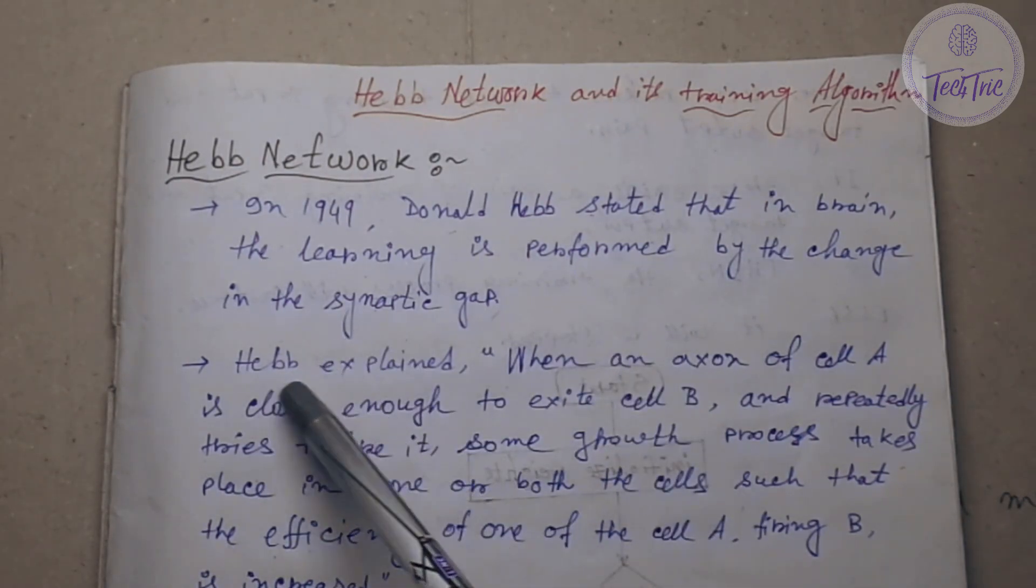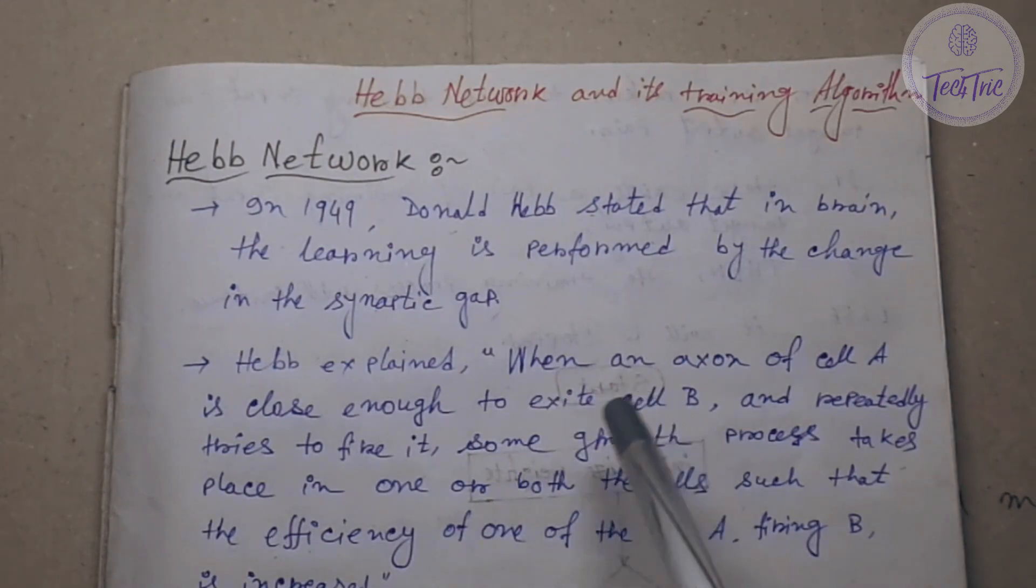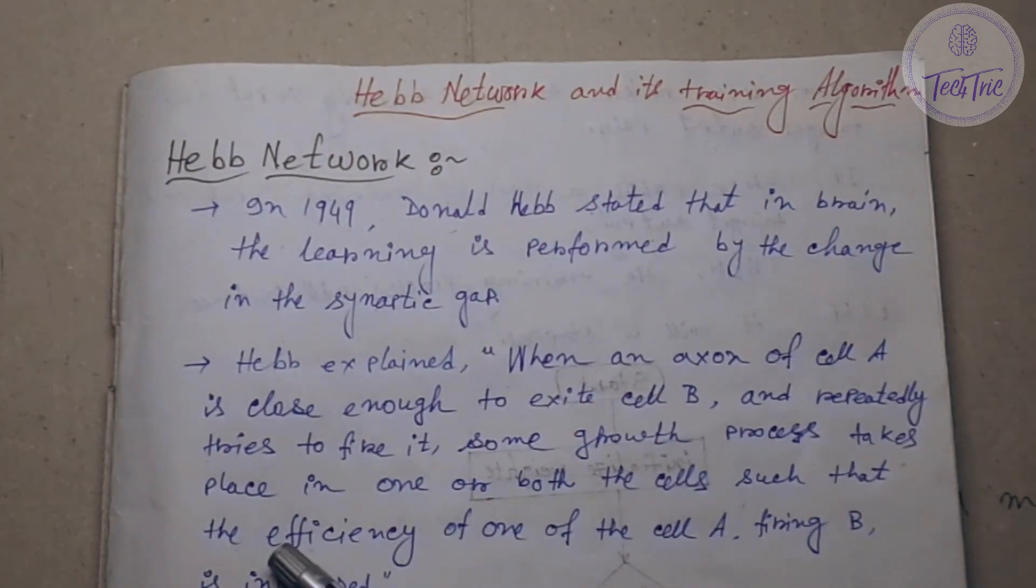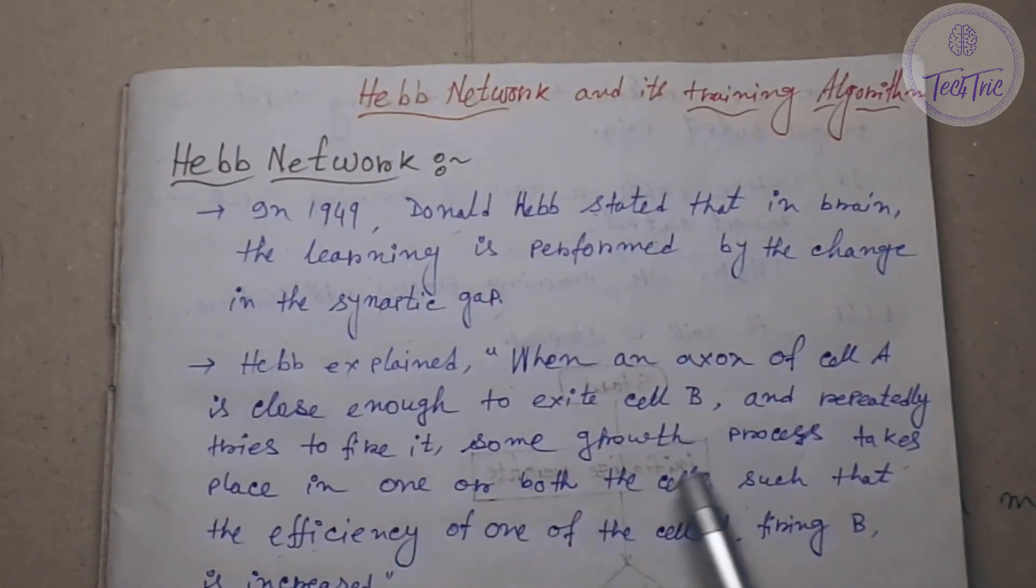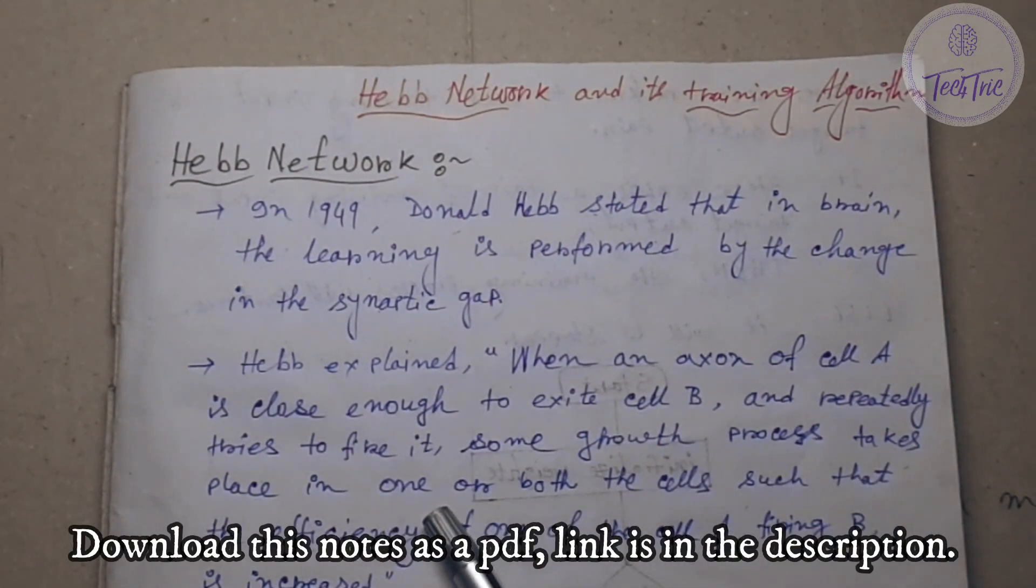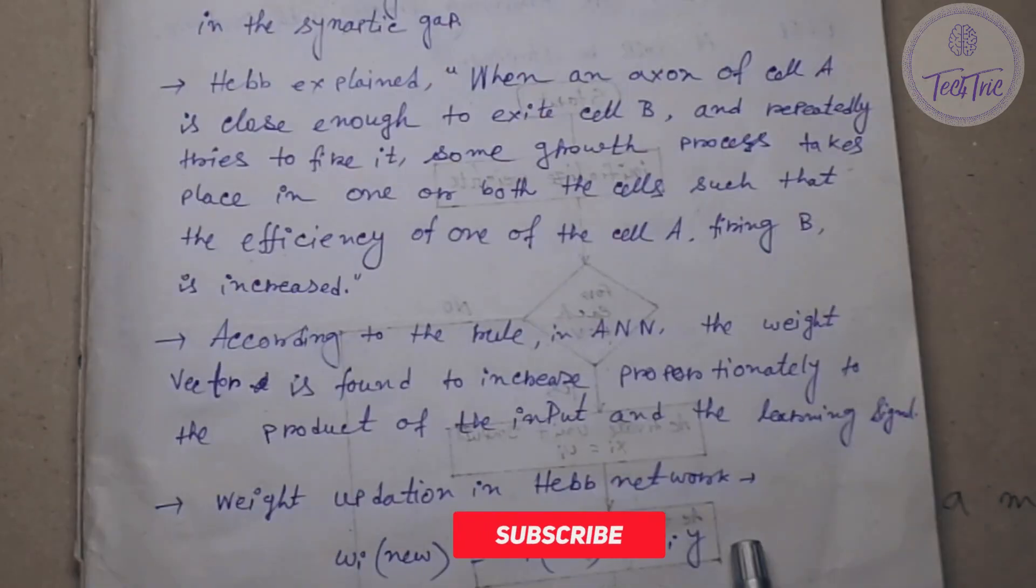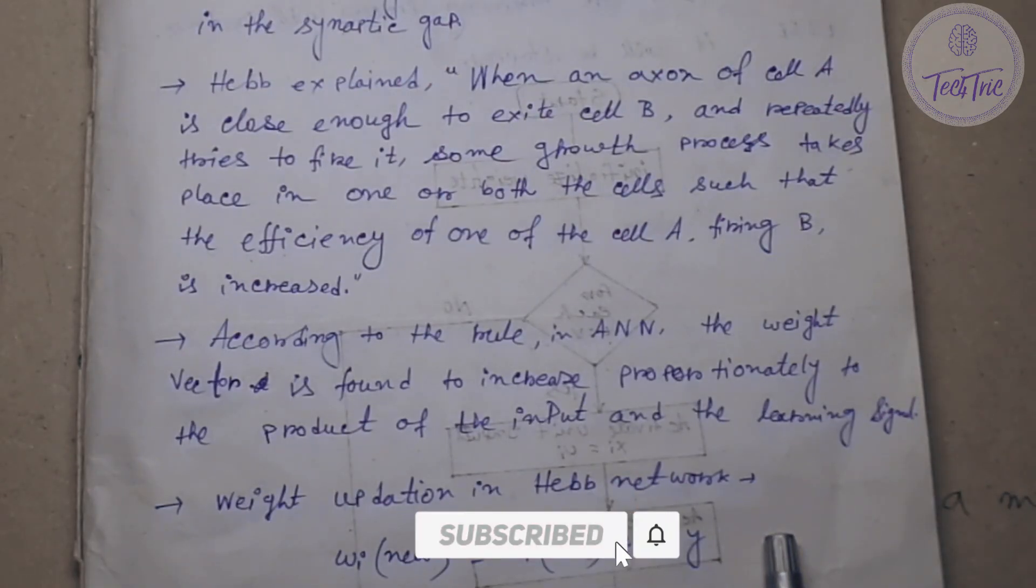Hebb explained that when an axon of cell A is close enough to excite cell B and repeatedly tries to fire it, some growth process takes place in one or both the cells such that the efficiency of one of the cell A which is firing B is increased.